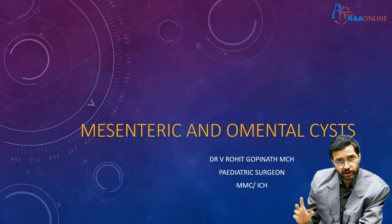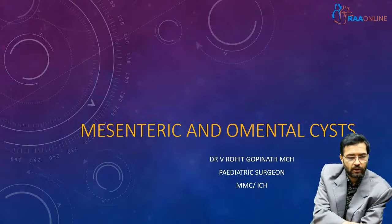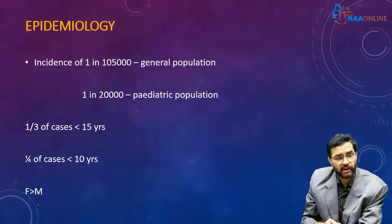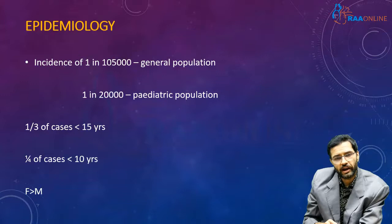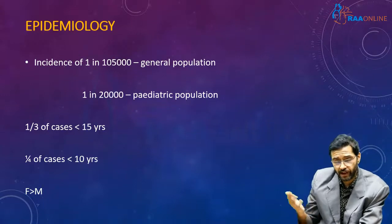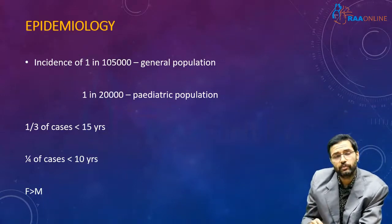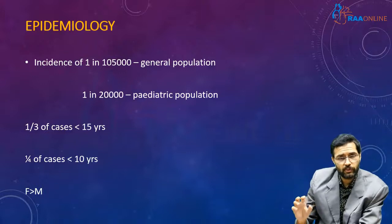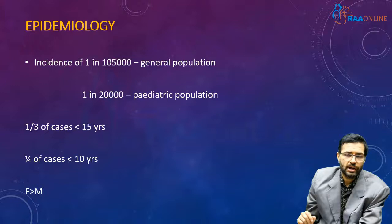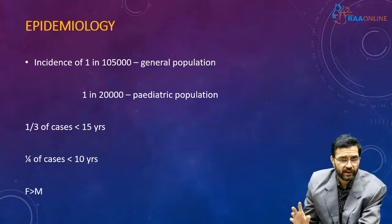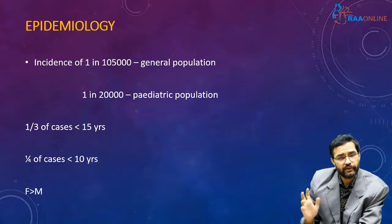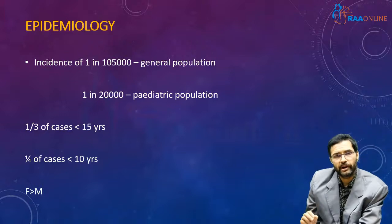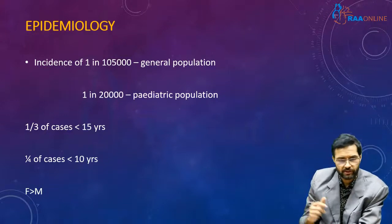This particular topic is mesenteric and omental cysts. Mesenteric and omental cysts have an incidence of 1 in 100,000 in the general population, and a significantly higher incidence of 1 in 20,000 among the pediatric population. One third of people who present with a mesenteric or omental cyst are less than 15 years of age, and one fourth of cases are less than 10 years of age. There seems to be a definite female predominance with regard to omental cysts.